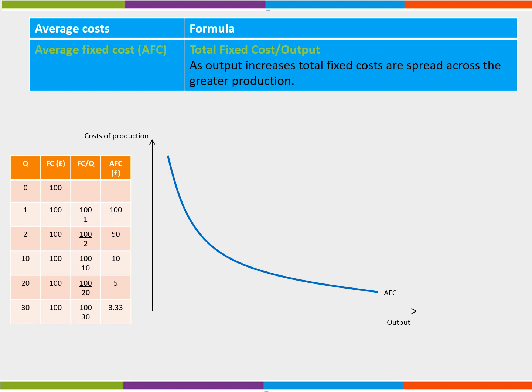We can illustrate average costs by using a diagram. Firstly we start with average fixed costs. As output increases, total fixed costs are spread across a greater production. If fixed costs equals 100 pounds and the firm produces one unit, average fixed costs equals 100 pounds divided by the one unit equals 100 pounds.